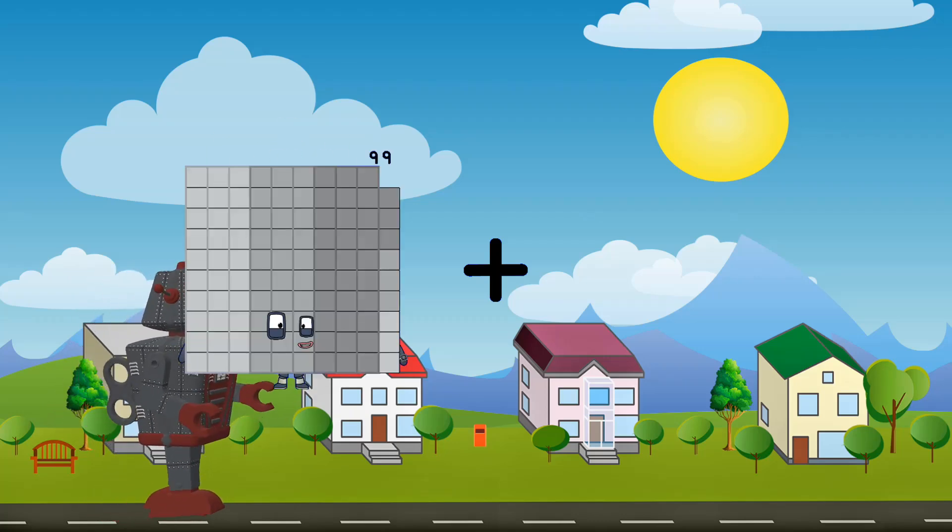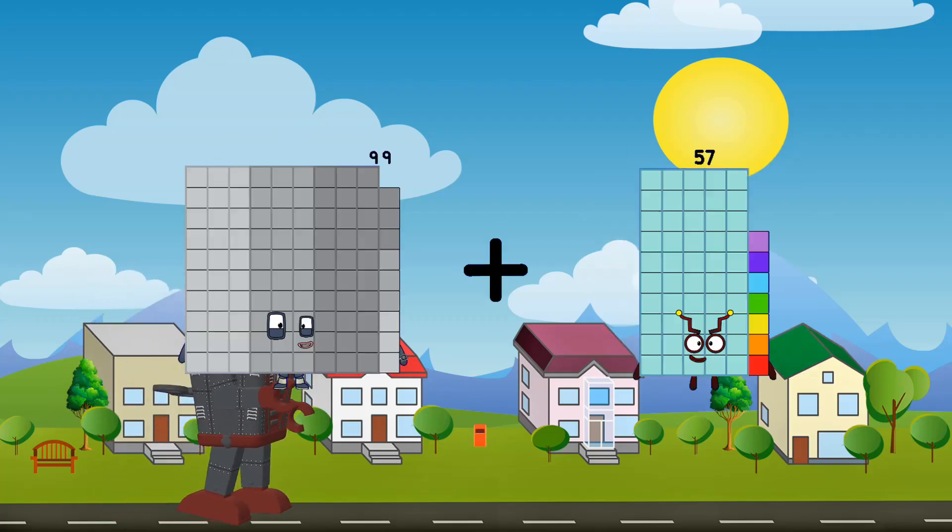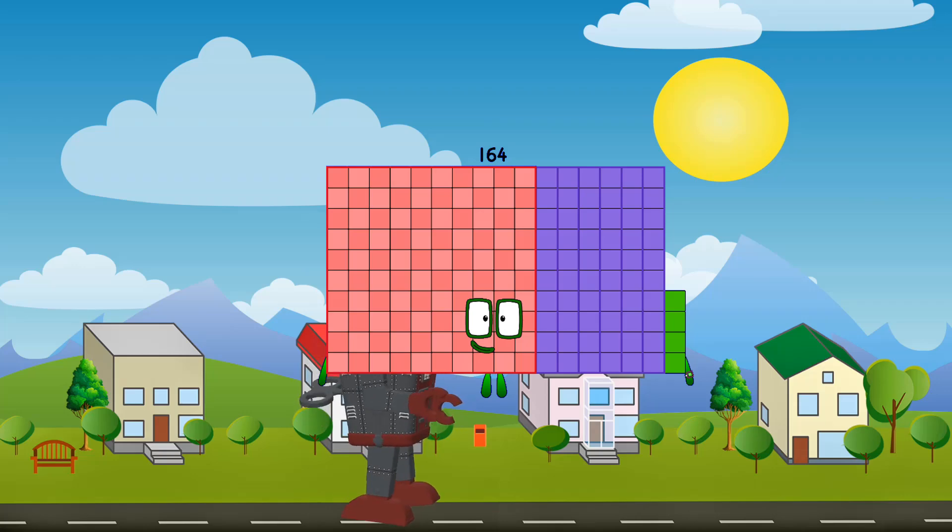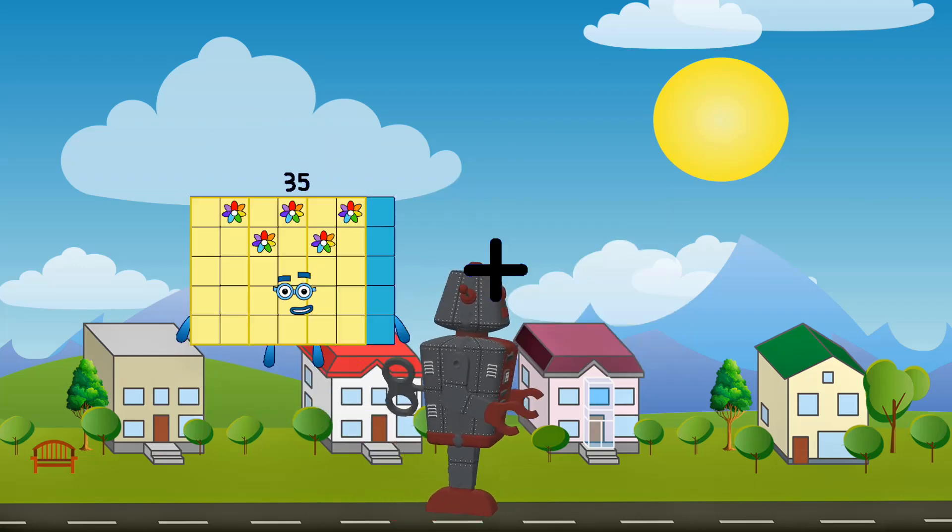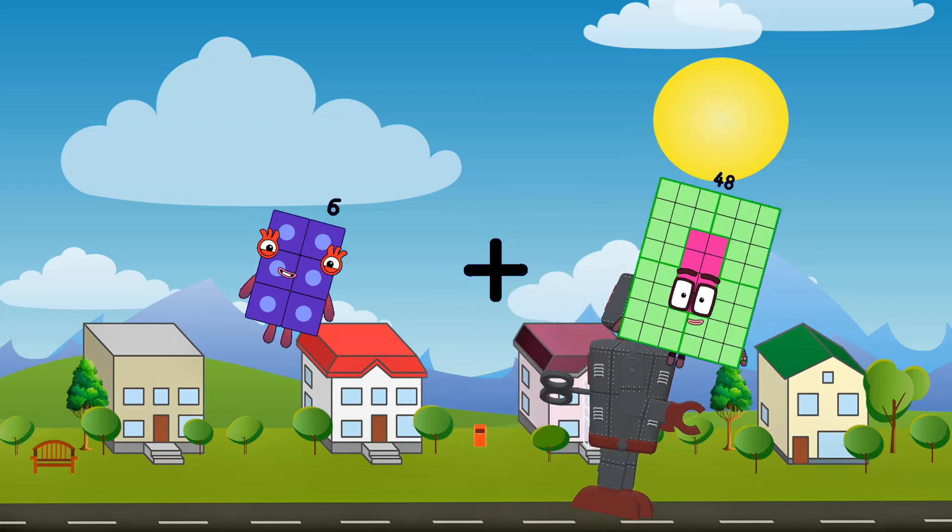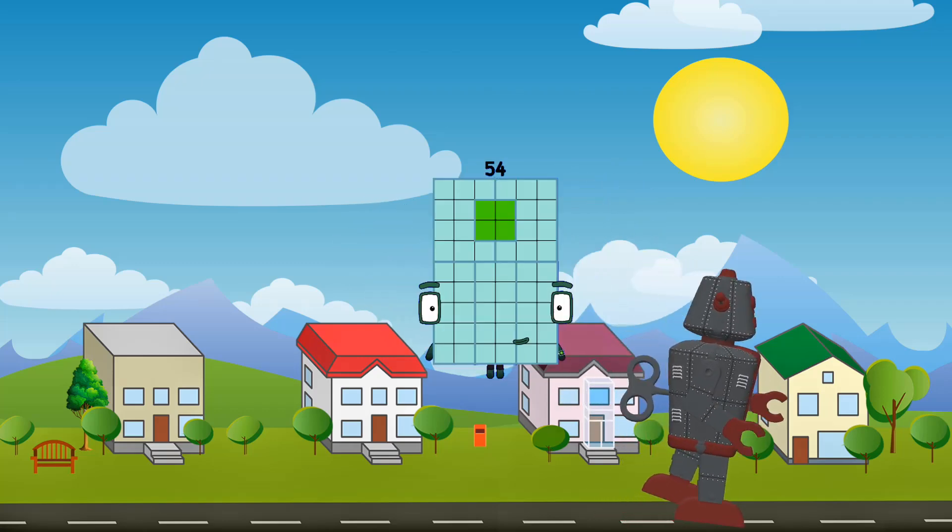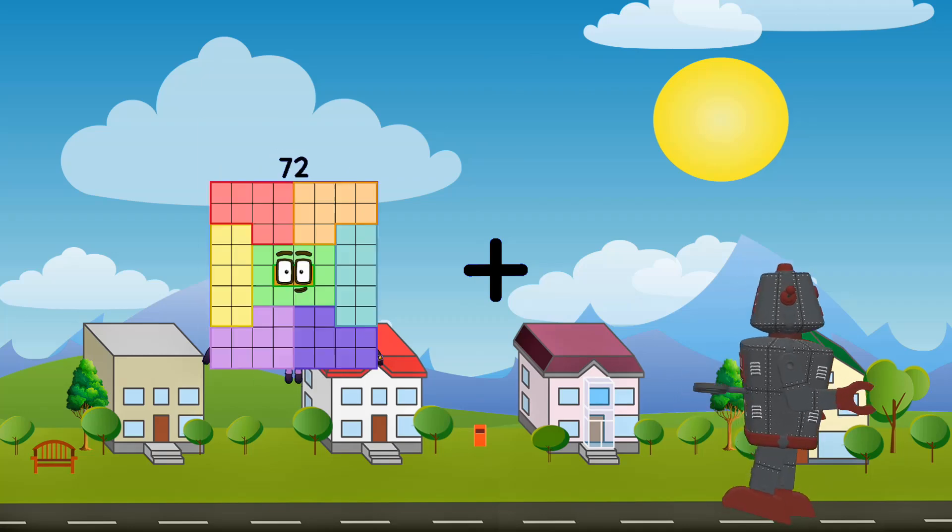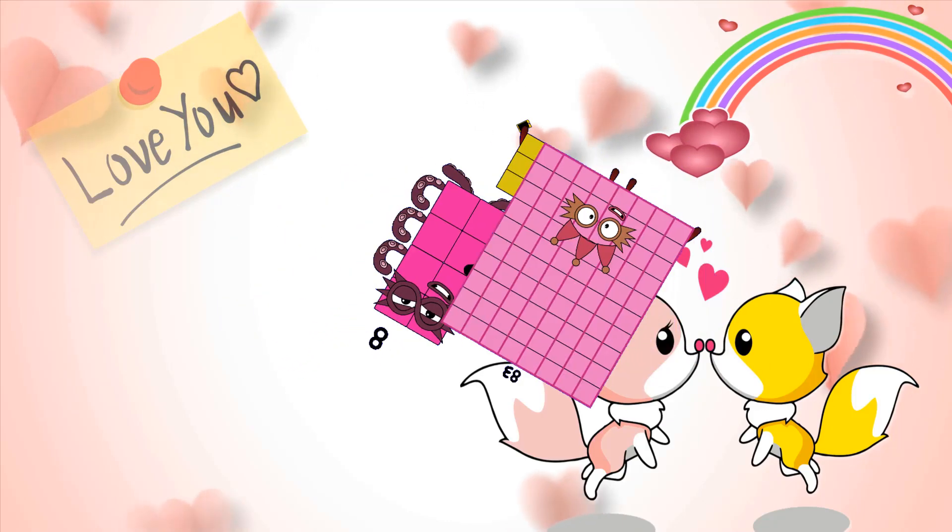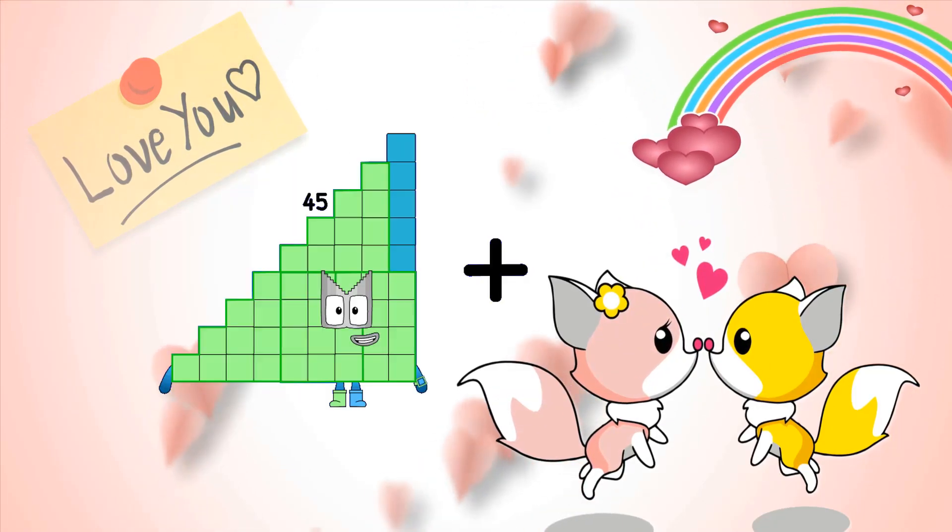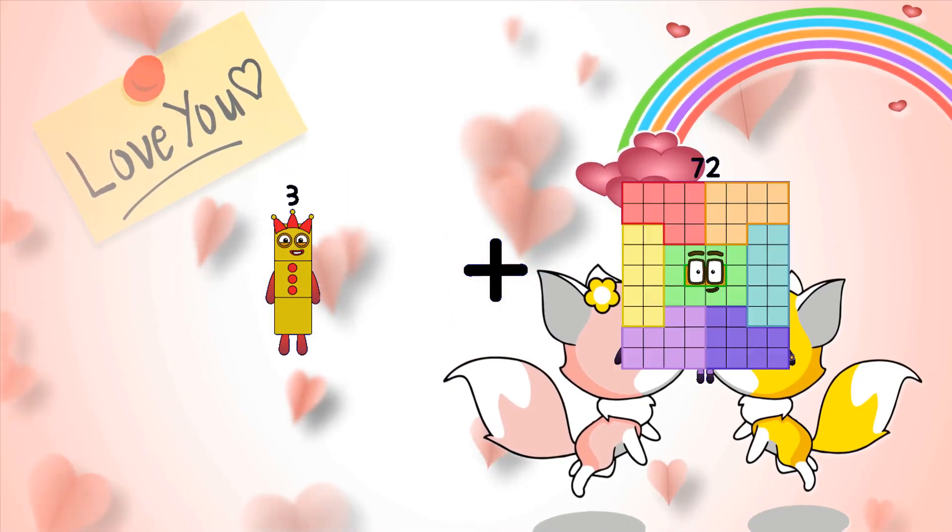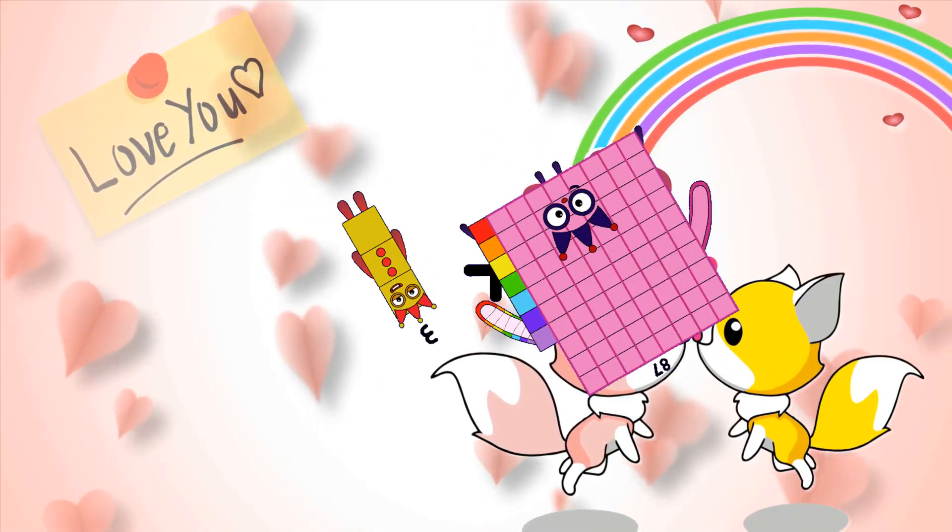99 plus 65 equals 164. 6 plus 48 equals 54. 8 plus 83 equals 91. 3 plus 87 equals 90.